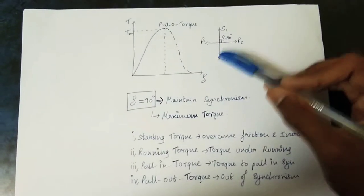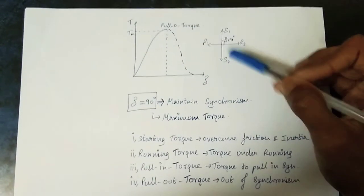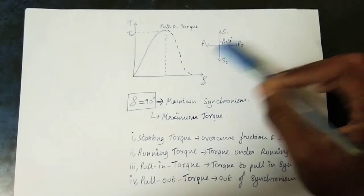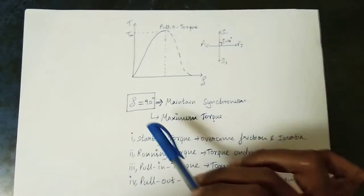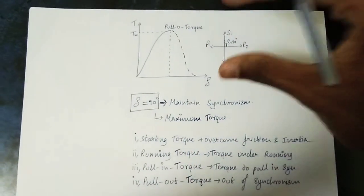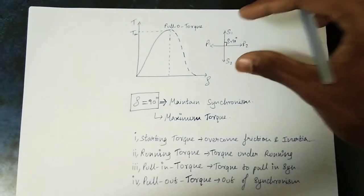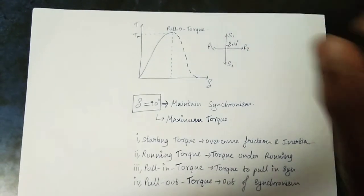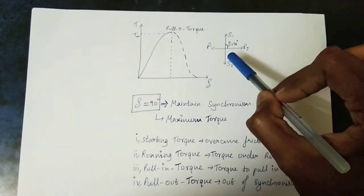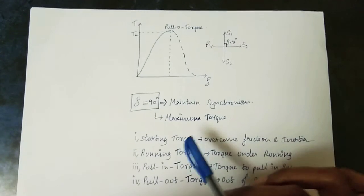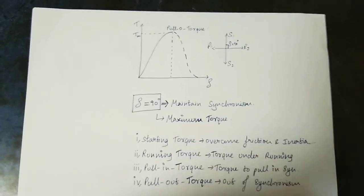S1 is the stator with maximum flux wave. The second case is when the rotor axis is at 90 degrees to the stator axis — this is the condition for maximum torque. The axes are at 90 degrees and this gives the maximum torque.